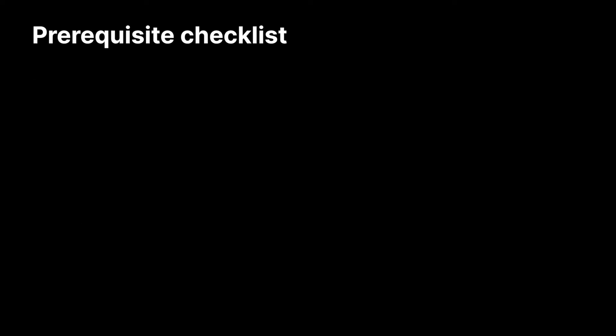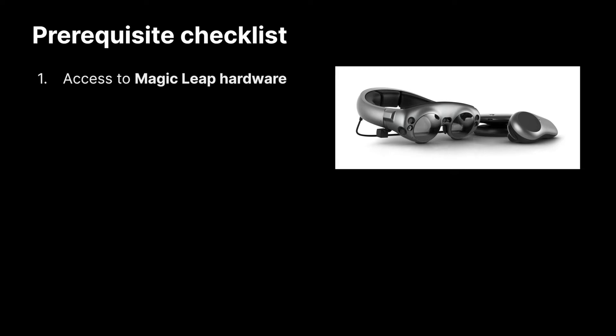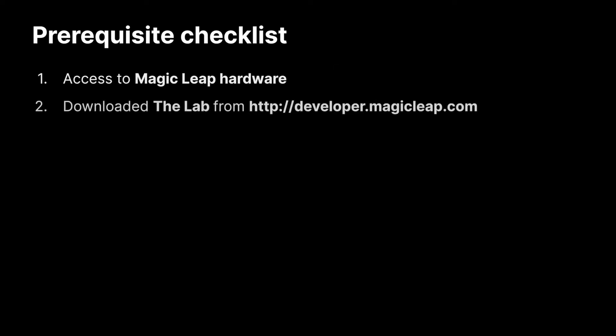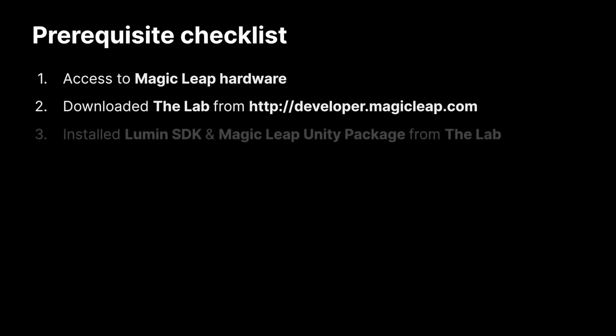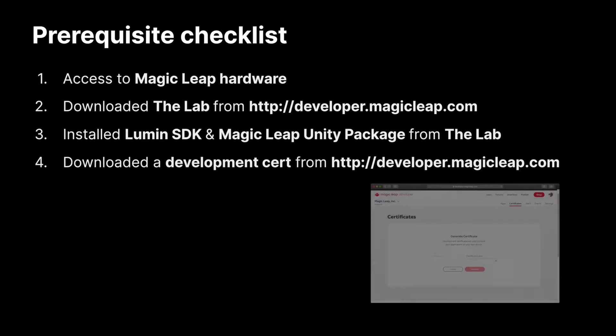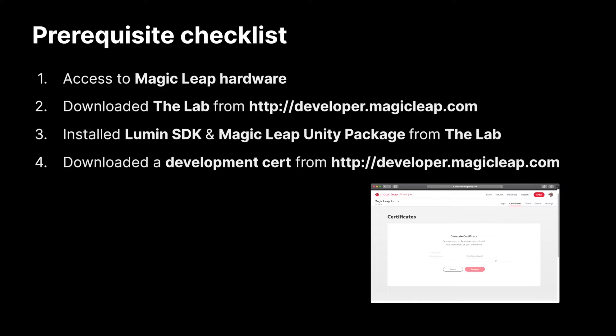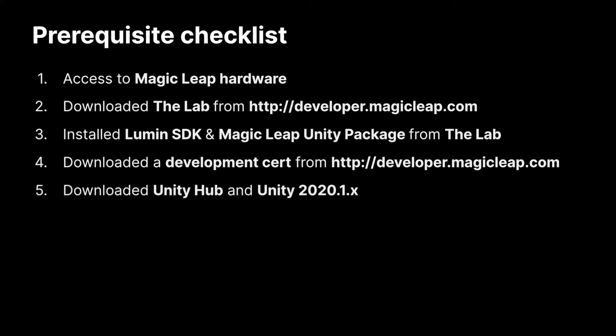Before we go further, we are making a number of assumptions here as far as what you already have available or installed. First, you'll need access to Magic Leap hardware — AR Foundation features do not work with our simulator, so you'll need an actual physical device. Our developer tools need to be installed via the Lab at developer.magicleap.com. You need to install the Lumen SDK from the Lab, and optionally the Magic Leap Unity Package. In order to deploy development builds to your device, you need to download a development certificate along with the associated private key, both found on our developer portal. You'll need Unity 2020.1 installed from the Unity Hub, and optionally, having Git installed will make it easy to grab the correct branch of code for the AR Foundation samples.